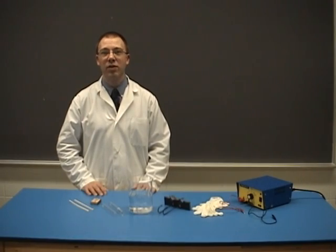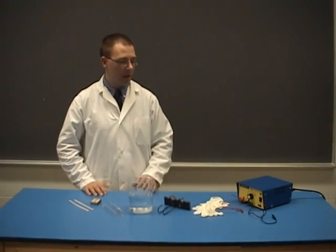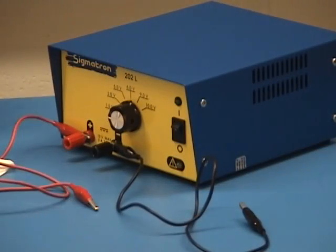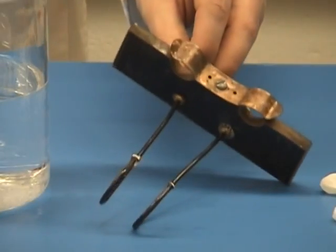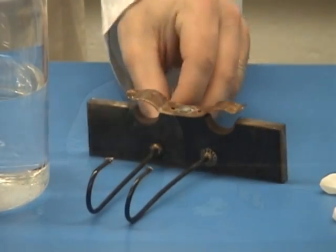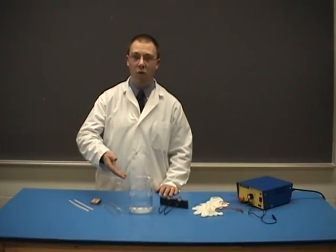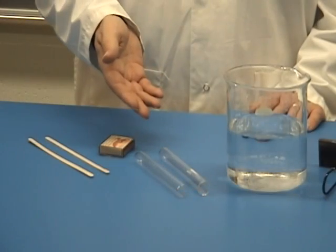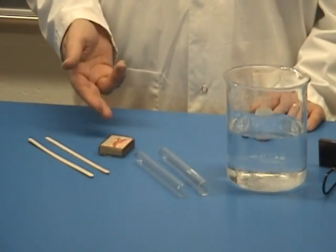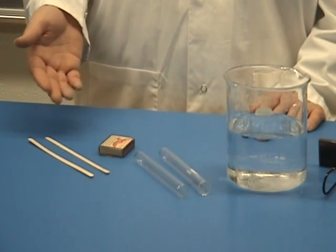The materials that you'll need for this lab are a power supply and wires, rubber gloves, an electrolysis apparatus, a beaker filled with water (and in this experiment we've added acid), two test tubes, matches, and wooden splints.